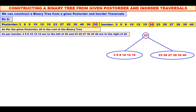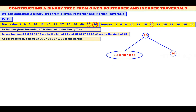Now, because it is post-order, we have to consider the right. Among 23, 25, 27, 30, 35, 40, which is the root? See the post-order — the last is 30. So 30 is the root. We will make 30 as the root and mark it in the inorder also.